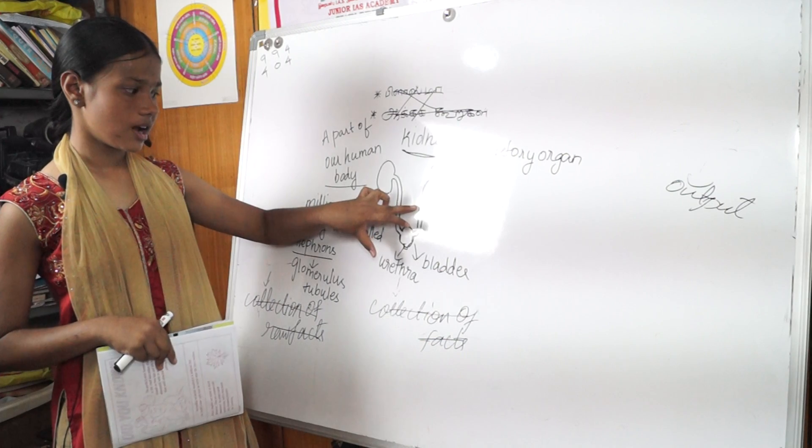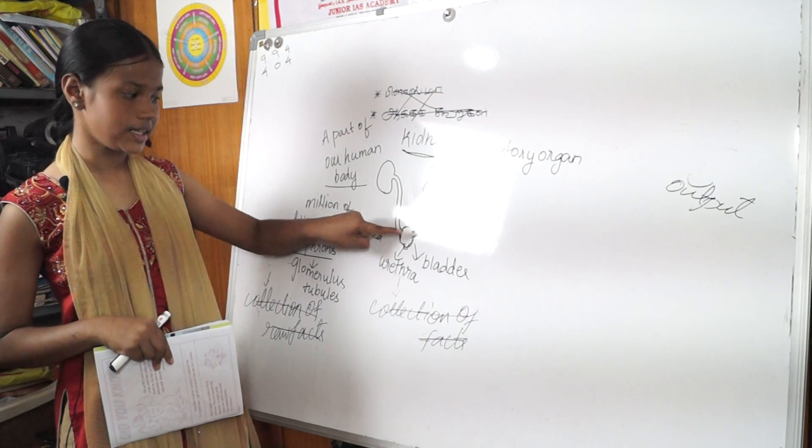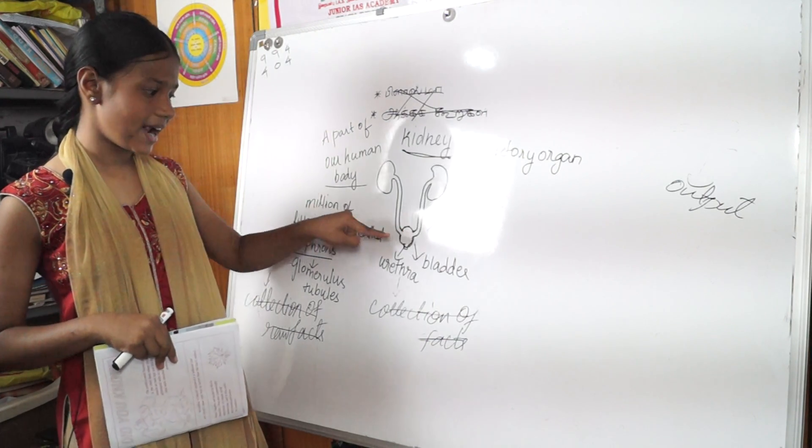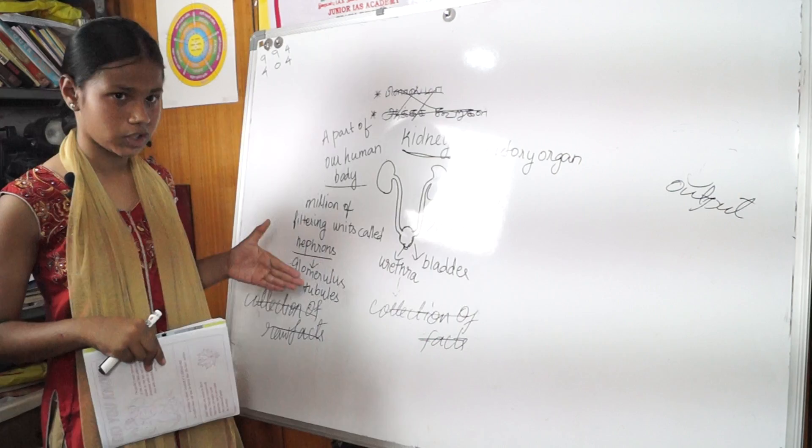Ureters allow the urine to pass through it and through the bladder. From urethra, it removes the urine.